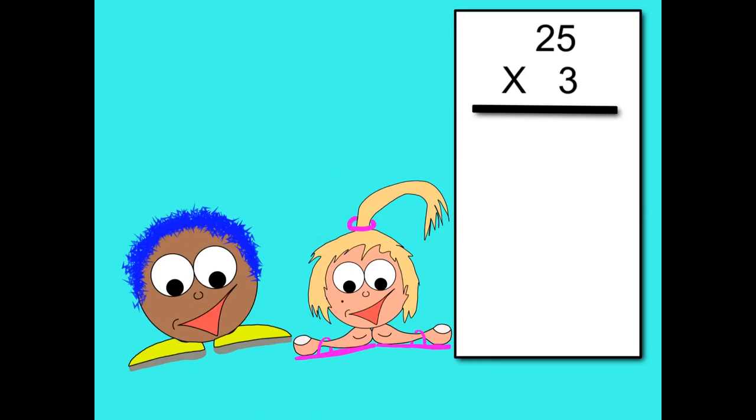Okay Trish, so we've got three groups of 25. The first thing we're going to do is multiply the units by 3. So 5 times 3 is 15. So I put down my 5 and I carry my 1 into the tens column. Then I'm going to multiply the tens. So I go 3 times 2 is 6 plus the one I carried is 7. So three groups of 25 equals 75.